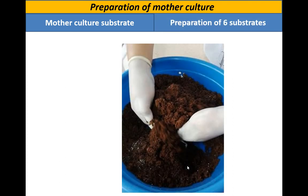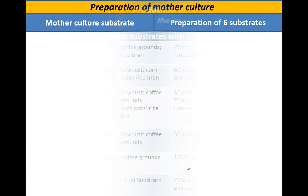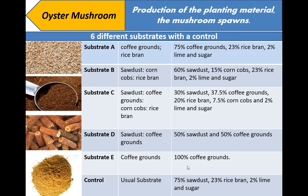Now let's prepare the substrates. In this study, we are using six types of substrates. Substrate A is composed of 75% coffee grounds and 23% rice bran. Substrate B is composed of 60% sodas, 15% corncobs, and 23% rice bran. Substrate C is composed of 30% sodas, 37.5% coffee grounds, 20% rice bran, and 7.5% corncobs. Substrate D is composed of 50% sodas and 50% coffee grounds. Substrate E is composed of 100% coffee grounds.